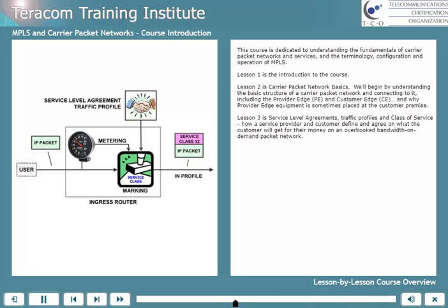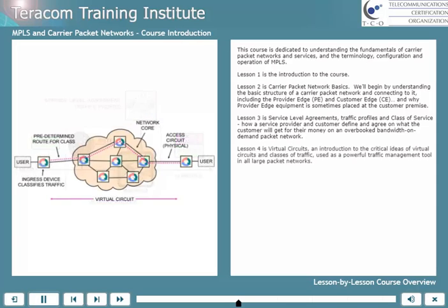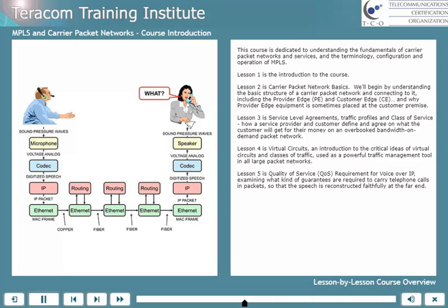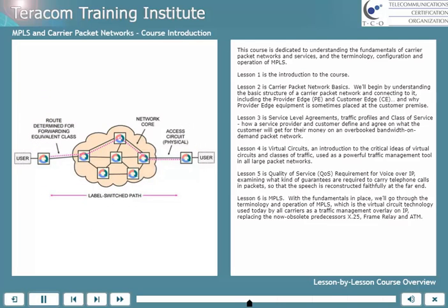Lesson 3 covers how a service provider and customer define and agree on what the customer will get for their money on an overbooked bandwidth-on-demand packet network. Lesson 4 is virtual circuits — an introduction to the critical ideas of virtual circuits and classes of traffic, used as a powerful traffic management tool in all large packet networks. Lesson 5 is quality of service requirements for voice over IP, examining what kind of guarantees are required to carry telephone calls in packets so that the speech is reconstructed faithfully at the far end. Lesson 6 is MPLS. With the fundamentals in place, we'll go through the terminology and operation of MPLS — multi-protocol label switching — which is the virtual circuit technology used today by all carriers as a traffic management overlay on IP. It replaces the now obsolete predecessors X.25, frame relay, and ATM.